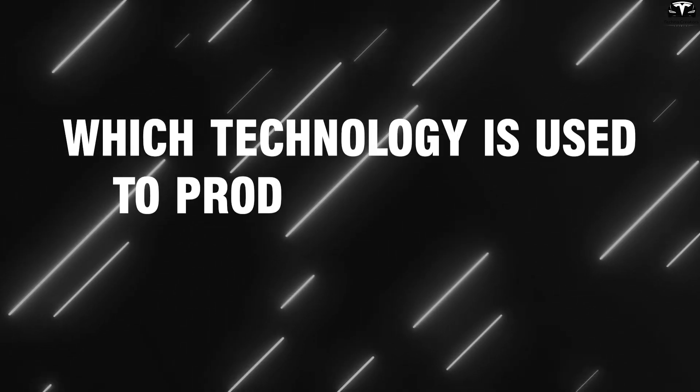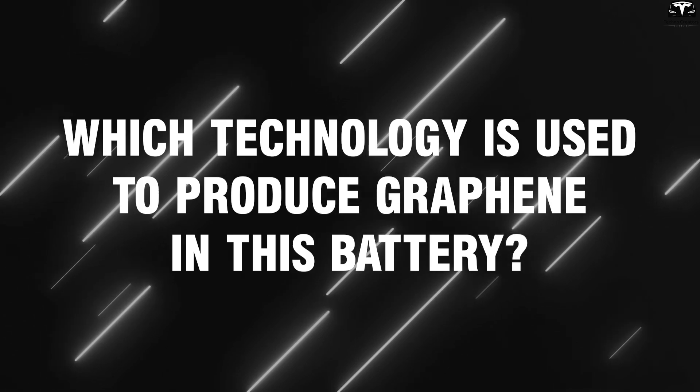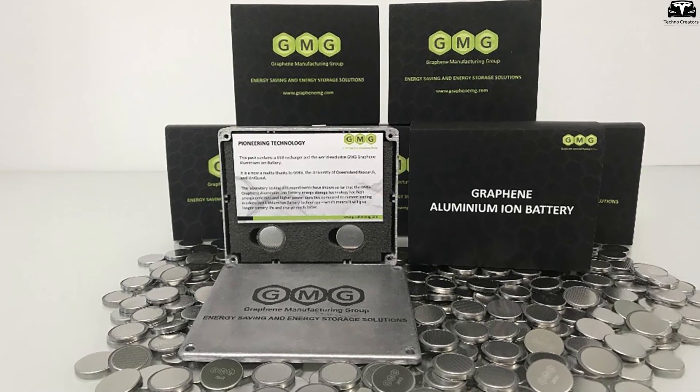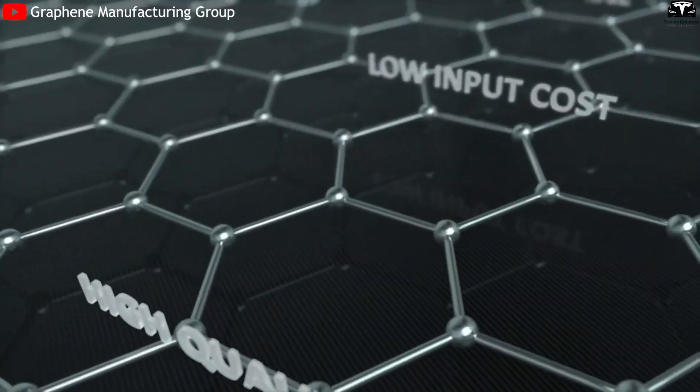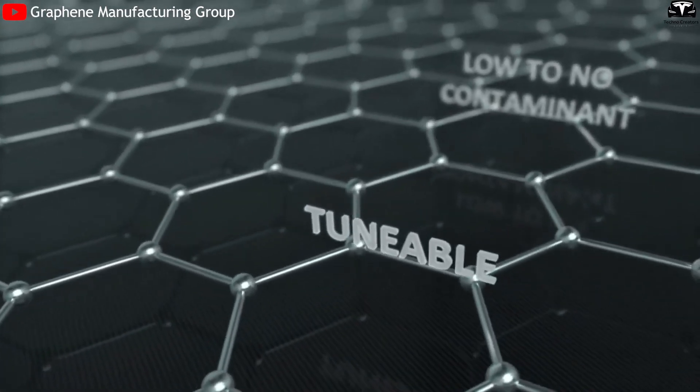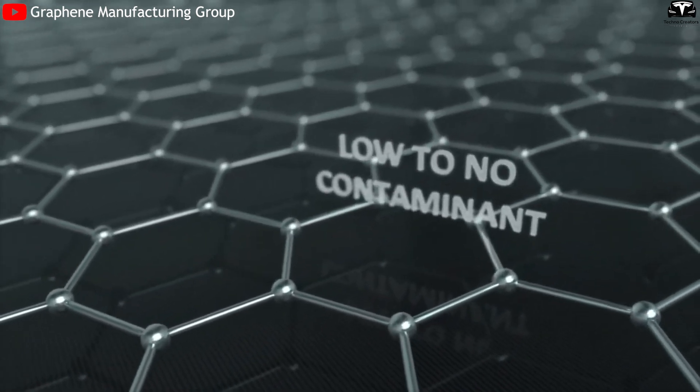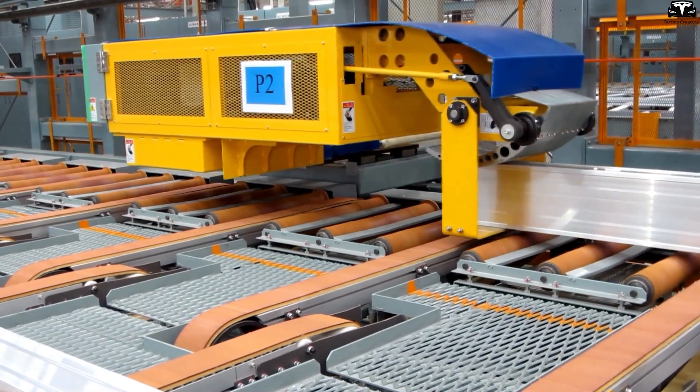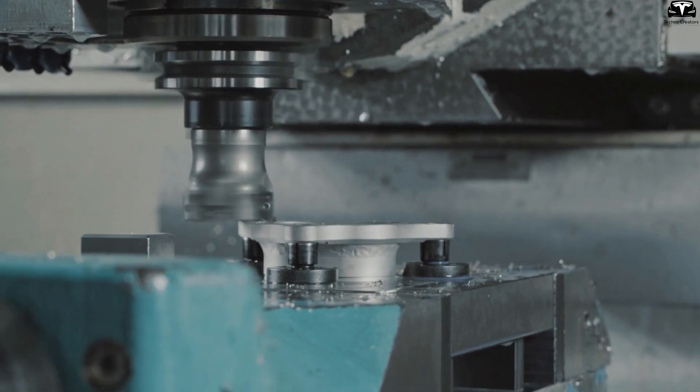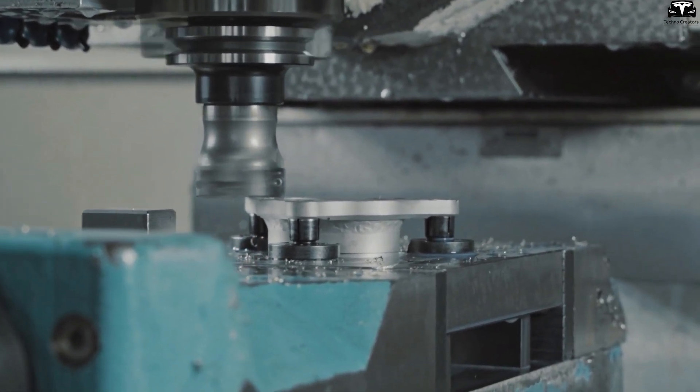Which technology is used to produce graphene in this battery? At the heart of G-plus AI battery production is the use of graphene, a single layer of carbon atoms arranged in a hexagonal lattice combined with aluminum ions as the charge carriers. Unlike lithium, aluminum is abundant, inexpensive, and environmentally friendly, which substantially reduces raw material costs.